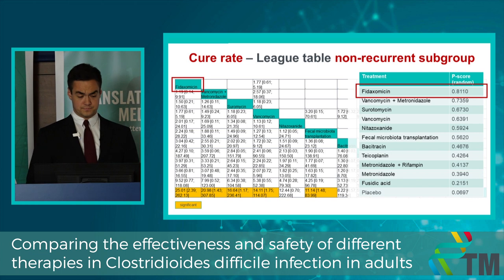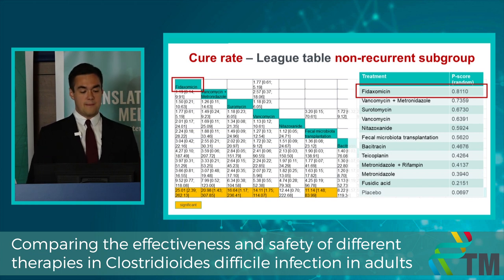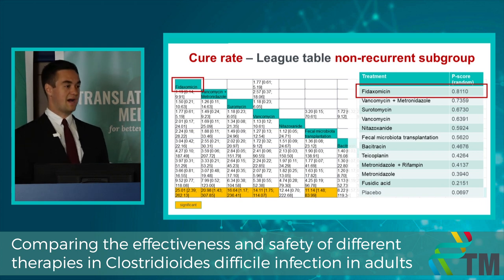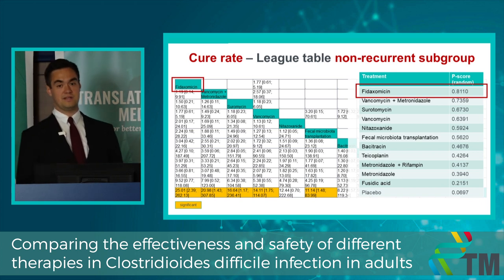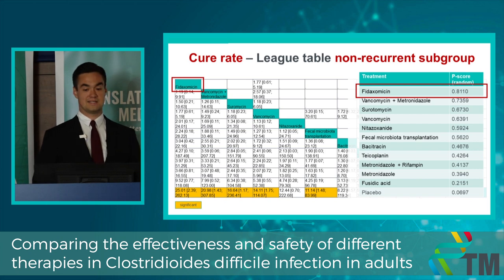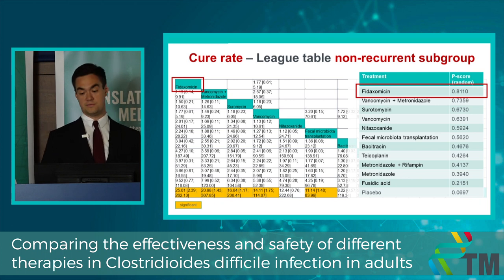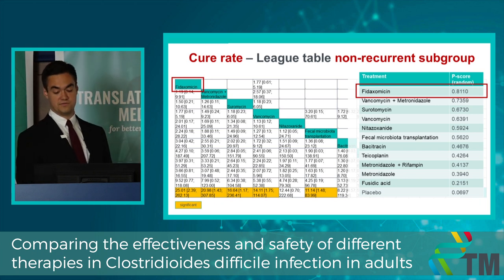But it is clinically significant, because it suggests that in the case of non-recurrent C. diff infection, the first chosen therapy is antibiotic therapy — and by the way, this is the same as what the current guidelines recommend. Among the antibiotics, fidaxomicin seems to be the best choice against C. diff infection.